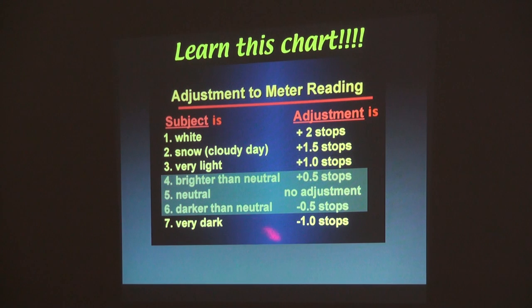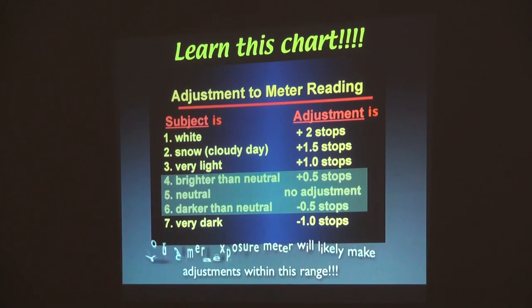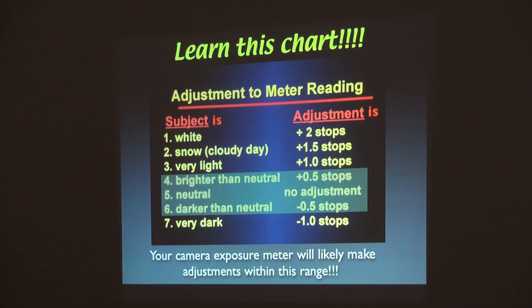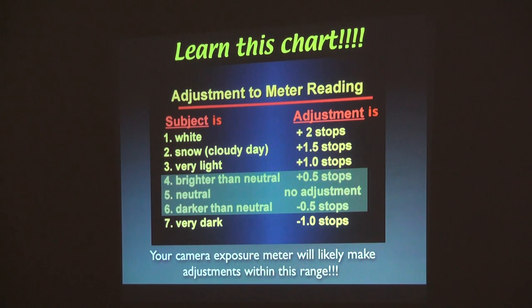I operate within this middle setting — a little bit darker, a little bit lighter. As long as the histogram is in the center between those two lines, you're okay. And the good news is your camera meter will likely make adjustments within this range, so you don't have to worry about it — if you're using evaluative metering. If you don't use that, then it won't.